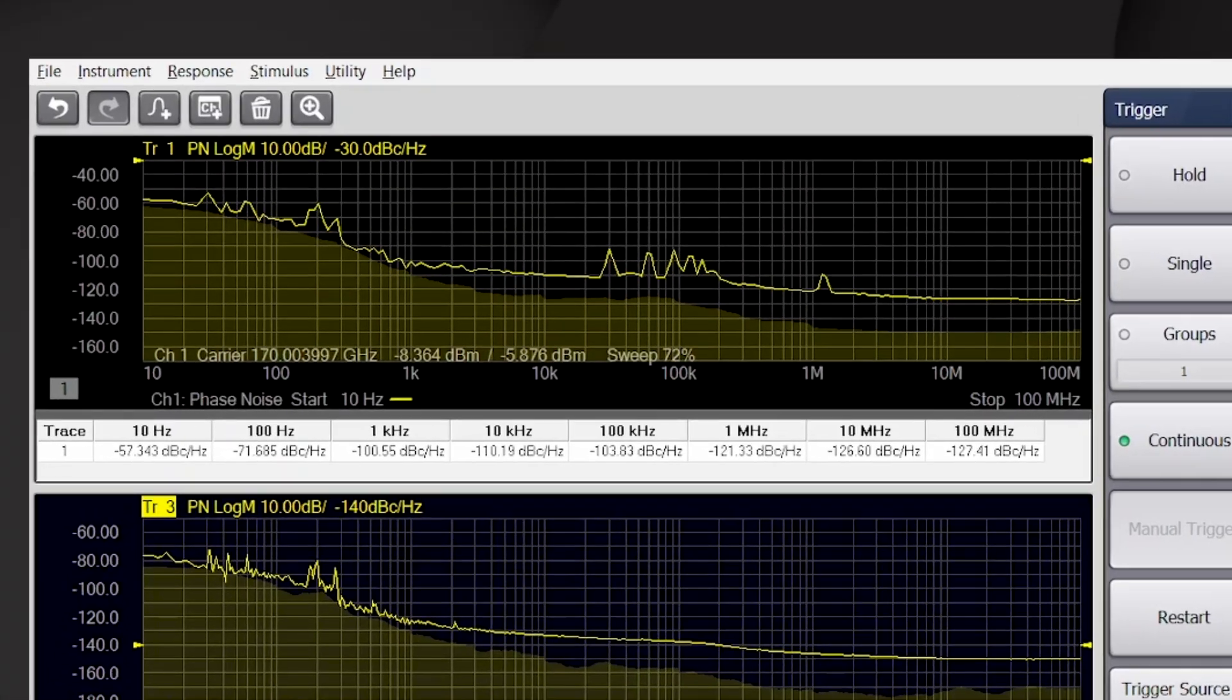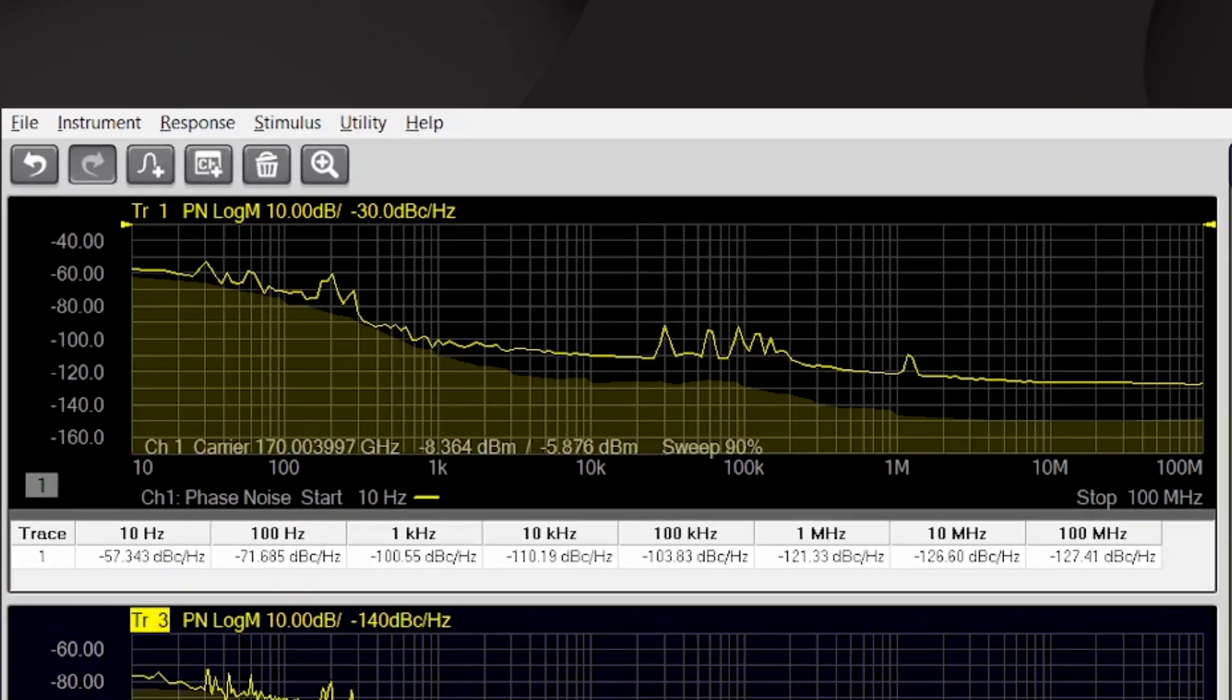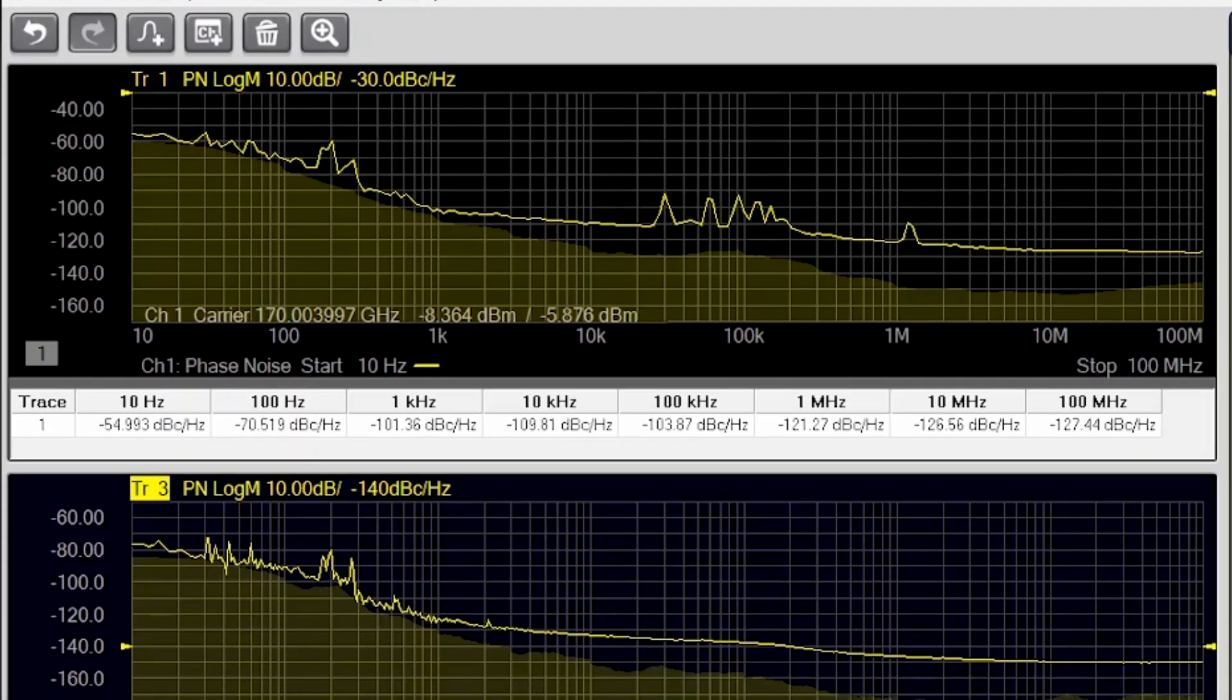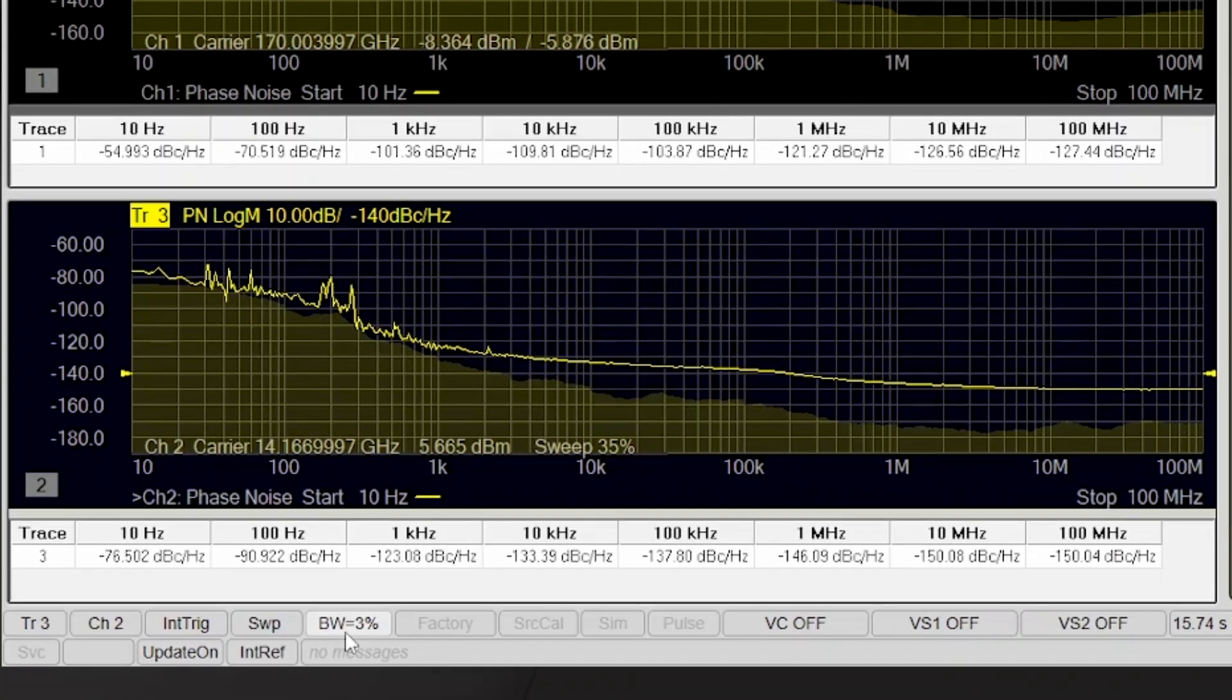The yellow trace in the top window is the phase noise performance of the VXG multiplied up to 170 gigahertz. The yellow trace in the bottom window is the native VXG phase noise at 14.167 gigahertz being measured sequentially without the use of a switch matrix.